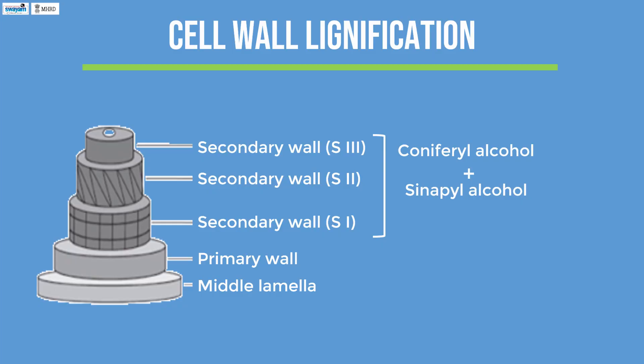Mostly the combination of H and G units starts at the onset of lignification, while only a few S units are detected during early stages of lignin deposition. Subsequently, coniferyl alcohol and sinapyl alcohol are incorporated to form a mix of G and S units during secondary wall formation.